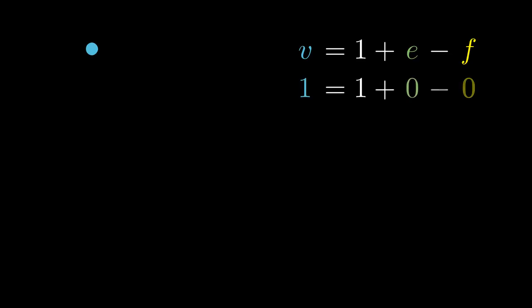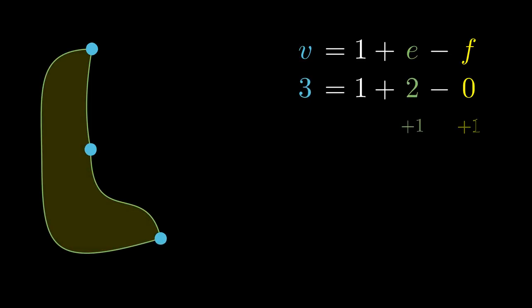Any other connected graph can be constructed using the following 2 operations. Either we can join 1 new vertex to the graph using 1 edge, so 1 is added to both sides of the identity so it still holds. Or we join 2 existing vertices using 1 new edge, and this defines 1 new face. Since edges are added and faces are subtracted, the right hand side doesn't change and the identity still holds.